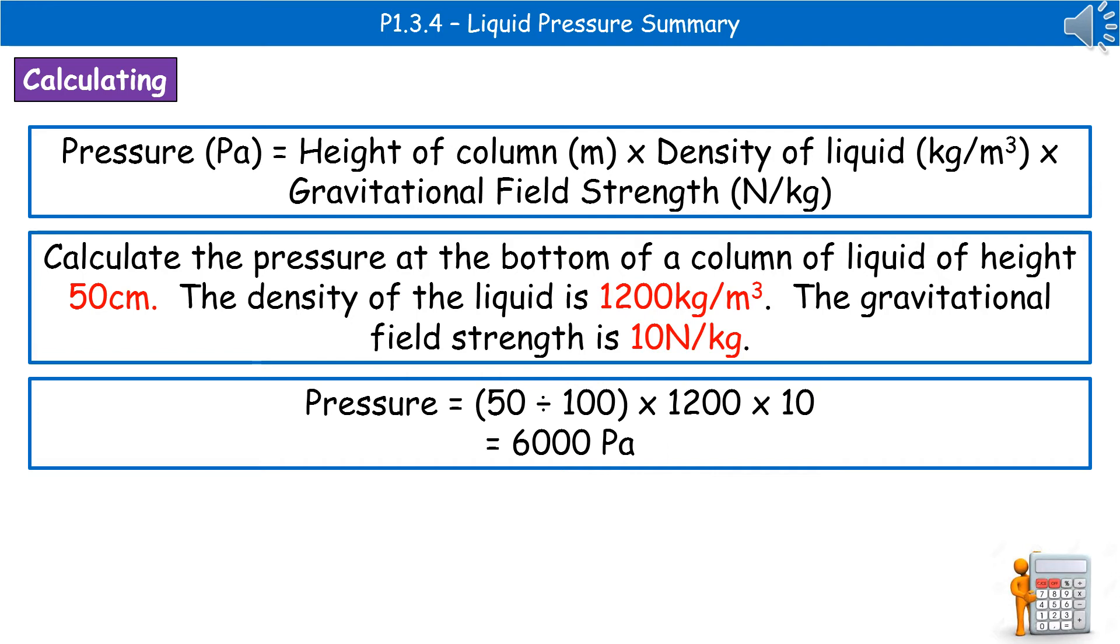Next thing to do is double check the units. So the density is absolutely fine, the field strength is fine, the only thing that's got different units to what we need is the height. Because in the question they've given it to us in centimeters, but the standard units are always meters. So we've got to convert centimeters to meters, which we do by dividing by 100. So to calculate the pressure, it's the height of the column times the density times G, so that would be 50 divided by 100 to get it into meters, times by 1,200 times by 10, which gives us our answer of 6,000 pascals.